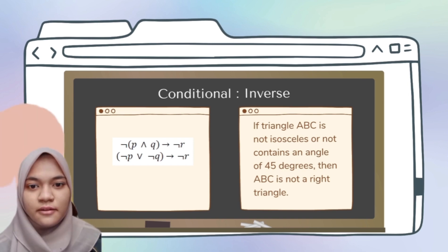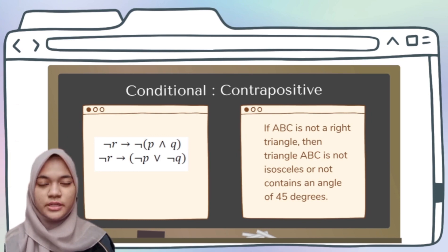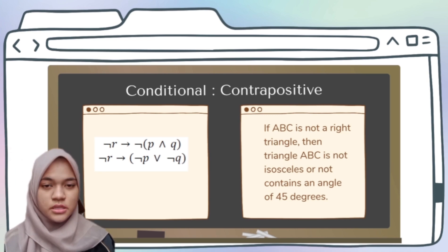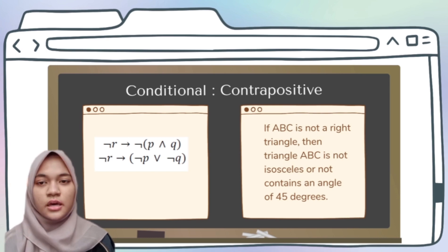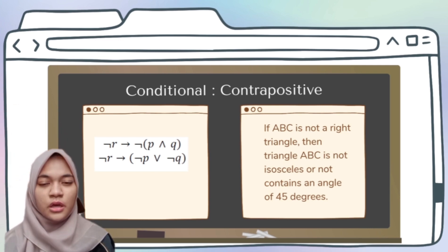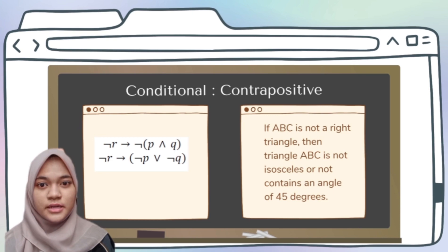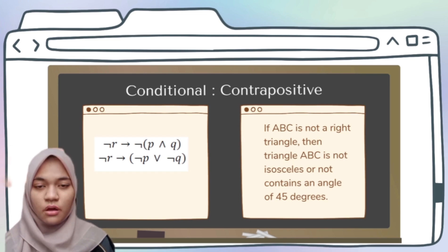The last conditional is contrapositive. From the original, you swap the conclusion and hypothesis and negate both. It becomes ¬R → ¬(P ∧ Q). Don't forget to expand ¬(P ∧ Q) using De Morgan's law. So the answer becomes ¬R → (¬P ∨ ¬Q). In sentence form: 'If ABC is not a right triangle, then triangle ABC is not isosceles or does not contain an angle of 45 degrees.'